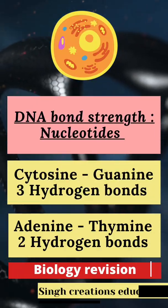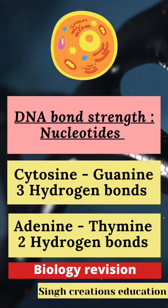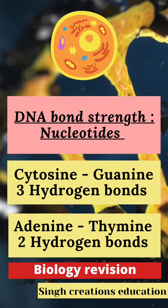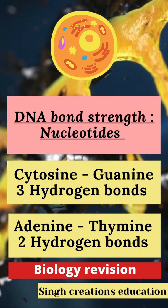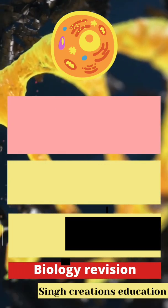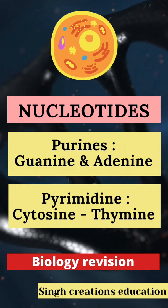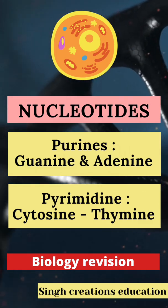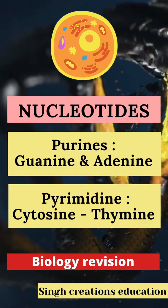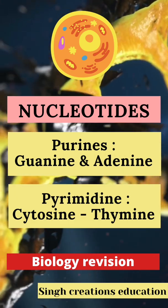The DNA is bonded with the help of nucleotides. The nucleotides cytosine and guanine are bonded with three hydrogen bonds, while adenine and thymine are bonded with two hydrogen bonds. The nucleotides are of two types: purines, which are guanine and adenine, and pyrimidines, which are cytosine and thymine.